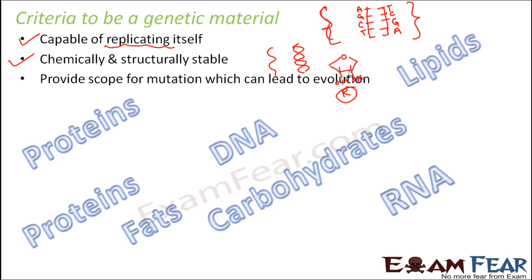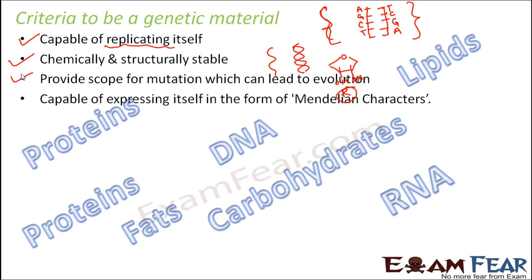The genetic material should also provide scope for mutation, which can lead to evolution. The molecule should be such that it can bring about some new changes as well — not just that traits are getting inherited and offsprings are simply clones of their parents. There should be some mutation, and these mutations over a period of time can give rise to evolution. A less stable molecule can bring about more mutation. RNA being less stable, viruses which have RNA as genetic material have a very short lifespan but faster evolution because the mutations are faster.